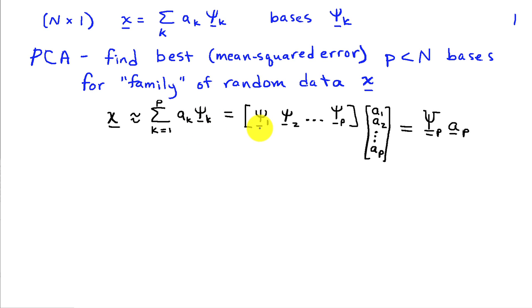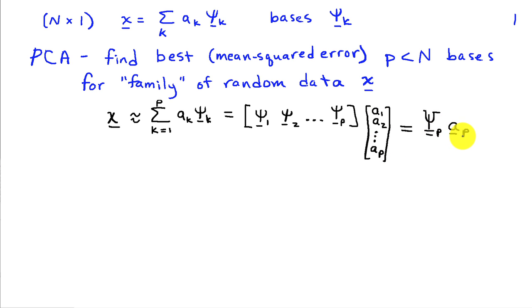We collect these basis vectors psi_k into a matrix, with the first column being psi_1 and the last column being psi_p, and collect the corresponding coefficients into a vector a with a_1, a_2, through a_p. We denote these as capital psi_p and vector a_p, where the p subscript denotes the number of columns in psi and the number of entries in a, indicating a p-dimensional representation.